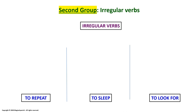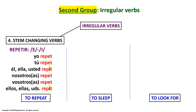Now we are going to talk about the second group: the irregular verbs. This group we are going to divide into six different categories. Let's begin with the first group — the stem changing verbs — like REPETIR. We are going to change the letter E to I. In preterite, this verb would be: Yo repetí. Tú repetiste. Él, ella, usted repitió. Nosotros, nosotras repetimos. Vosotros, vosotras repetisteis. Ellos, ellas, ustedes repitieron.